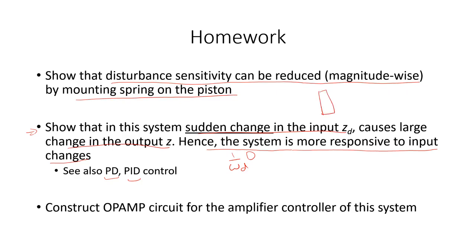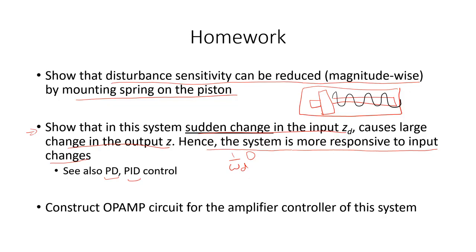In other words, if you add a spring to the piston — as was the case in the nozzle-flapper valve — then this is going to reduce the disturbance sensitivity of the system. Your third homework requires you to construct an op-amp circuit implementation of the controller.